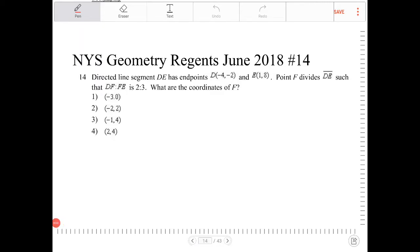Directed line segment DE has endpoints D(-4, -2) and E(1, 8). Point F divides DE such that DF to FE is 2 to 3. What are the coordinates of F?